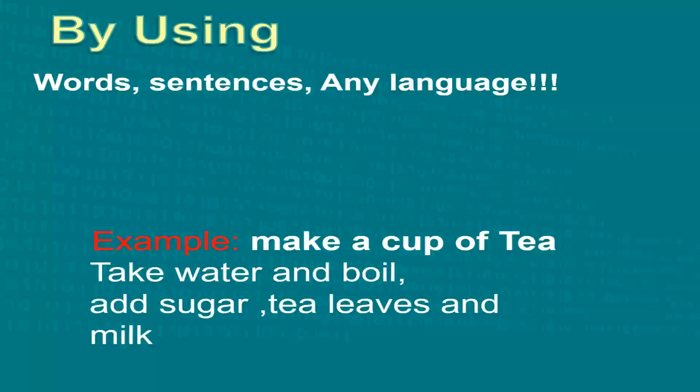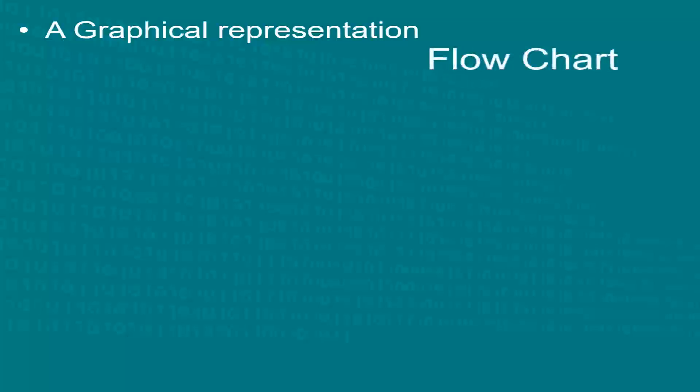For example, if I want to express an algorithm of making tea, using words, sentences or any other language, I will simply write: make a cup of tea, take water and boil it, add sugar, tea leaves and milk. The second way of expressing algorithms is by graphically representing them in a flowchart.